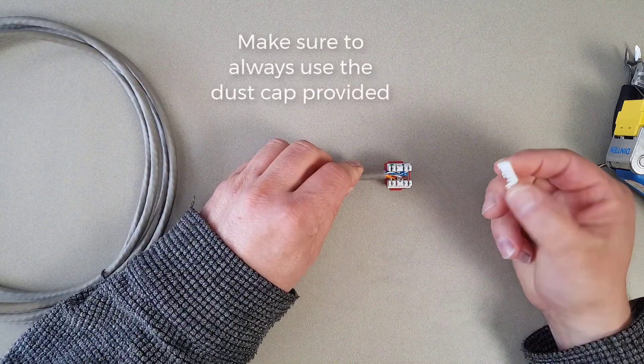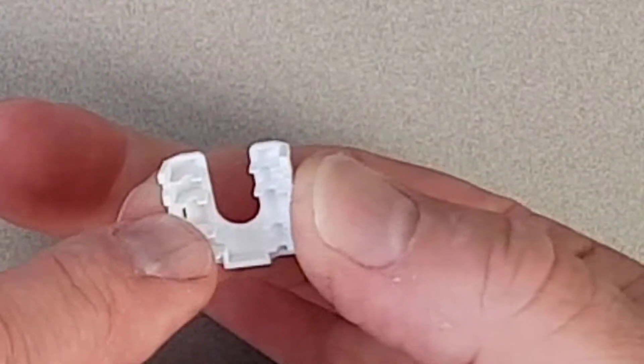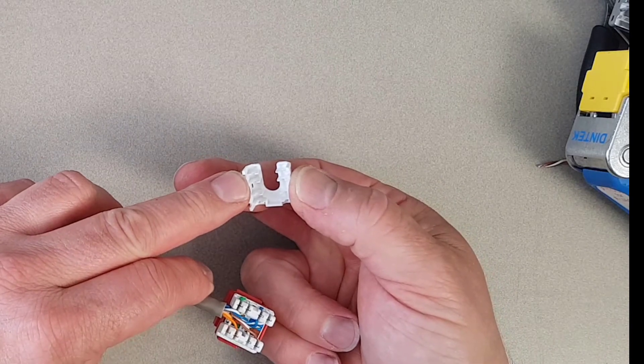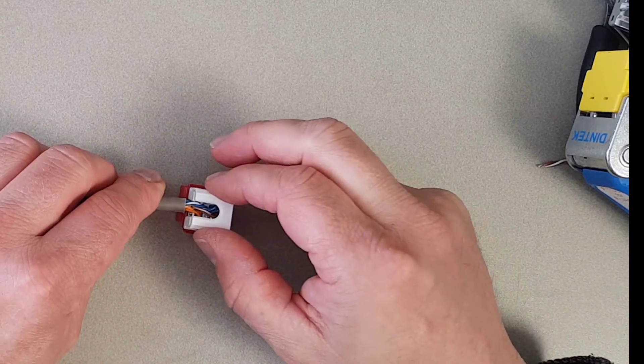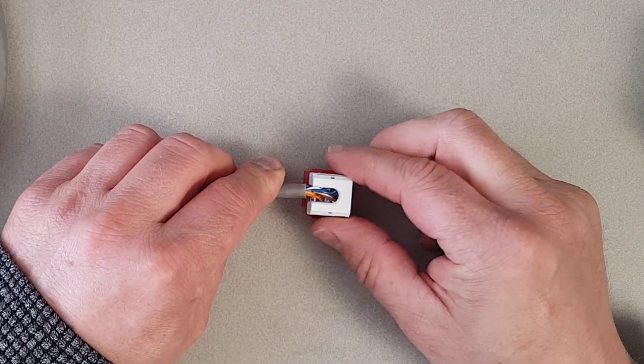Lastly we take the dust cap which has some spacing separators in there. The role of those is not just to keep dust out. It sits down on top of the wires and stops movement of the wires on the IDC terminations.